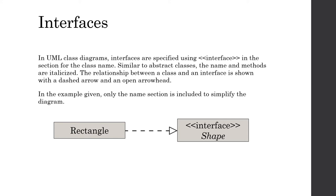For UML class diagrams, interfaces use a special interface annotation in the class name section. Similar to abstract classes, the name and methods are italicized. The relationship between a class and an interface is shown with a dashed arrow and an open arrowhead — you can see that between Rectangle and the Shape interface. The key unique things to show are that annotation in the name section and the arrow indicating which class implements the interface.